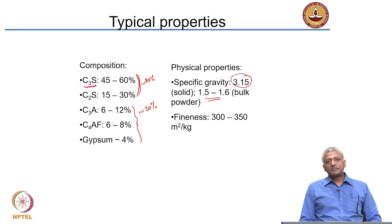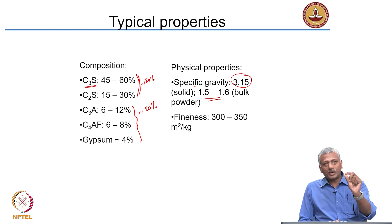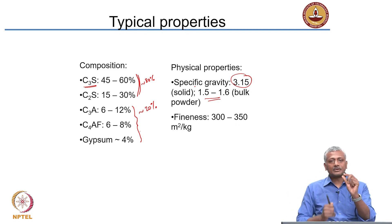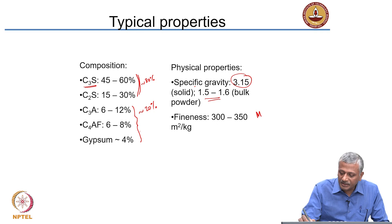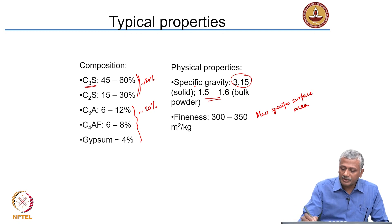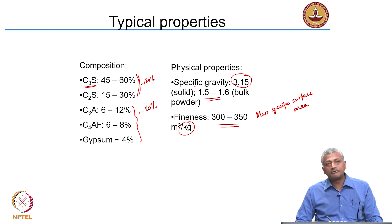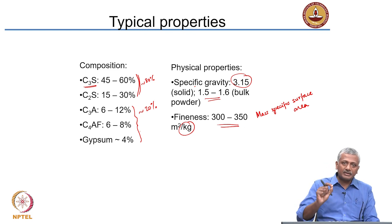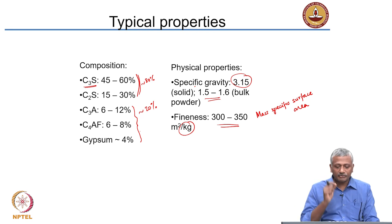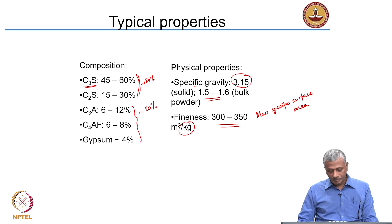Fineness of cement is expressed in terms of surface area — specifically mass specific surface area. If you take 1 kilogram of cement and measure all the surfaces of every grain, the mass specific surface area would be 300 to 350 square meters per kilogram.